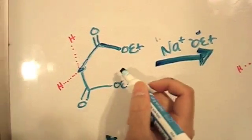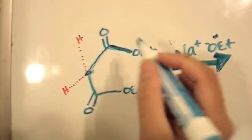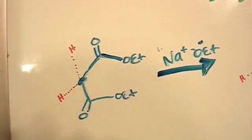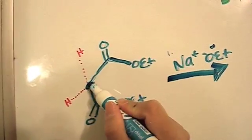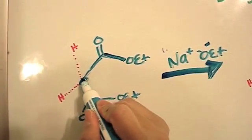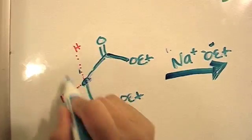First of all, we're going to look at the Malonic Ester. So we're going to specifically look at the alpha carbon here. The alpha carbon is important because this is where the deprotonation will occur. The alpha carbon has two hydrogen bonds right here.